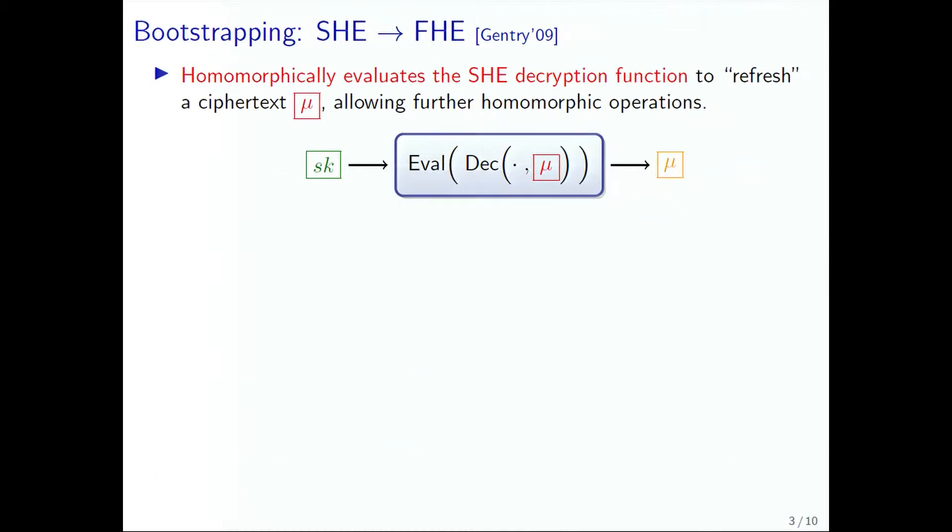So what is bootstrapping? Bootstrapping involves homomorphically evaluating the decryption function of the scheme. In the clear, you take the secret key and apply it to the ciphertext to get back the message. Here, we have encryptions of the secret key that are fresh, and we homomorphically compute the decryption function, so we end up with an encryption of the same message but with less error, because we've only done some amount of homomorphic operations.